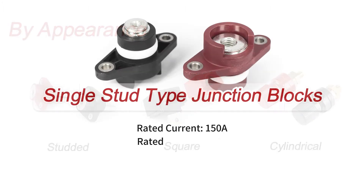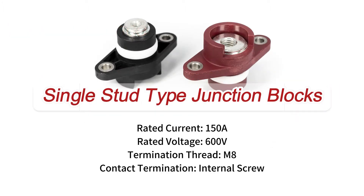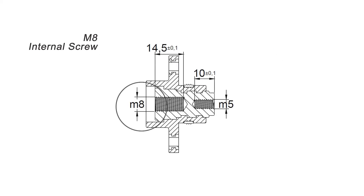Next, we will specifically introduce the different types of junction blocks. The first is the 150A High Current Copper Junction Block. Based on the drawing, you can see the specific product size parameters.